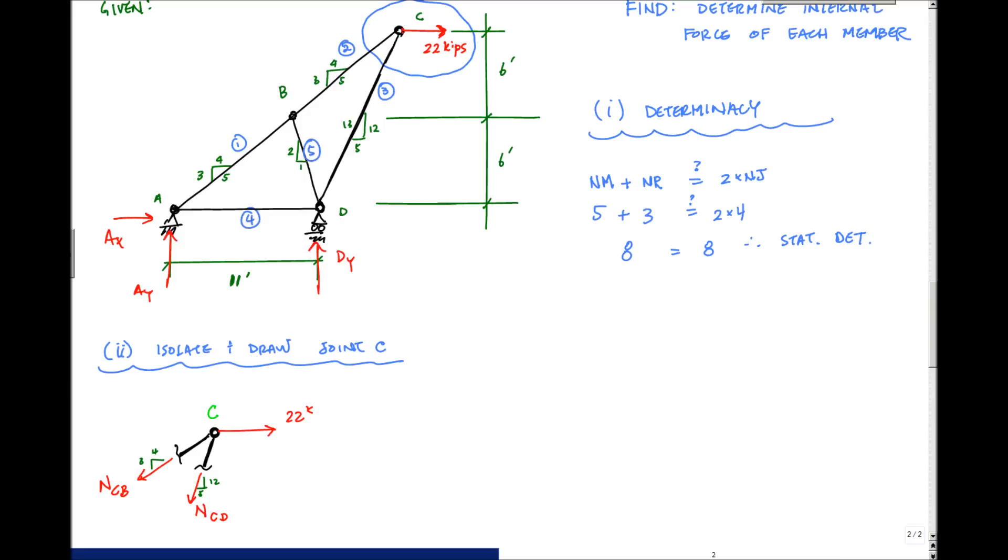Now a lot of times, a lot of people don't go through the hassle of drawing the members showing a cut like this. What they'll do is, in a lot of textbooks, they'll just draw the joint and then they'll just draw the forces. So here are 22 kips, N_CB and N_CD, and these two drawings are equivalent. These are equivalent drawings, they mean the same thing. It's just here I have a little bit more detail.